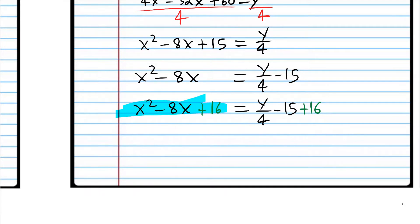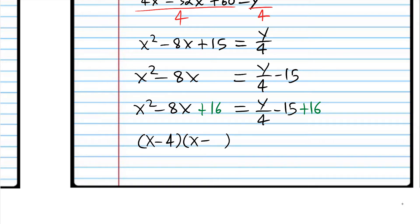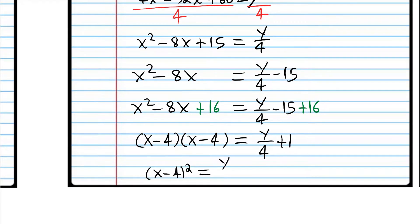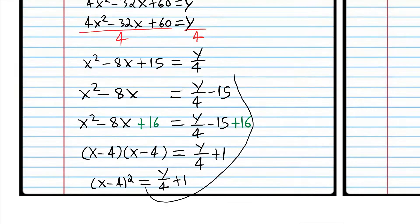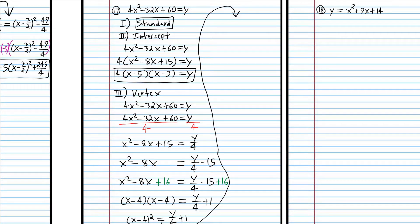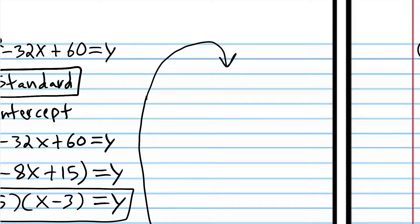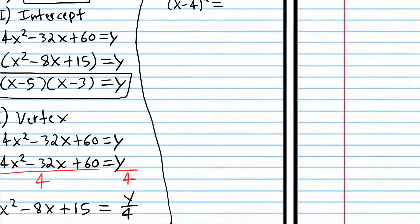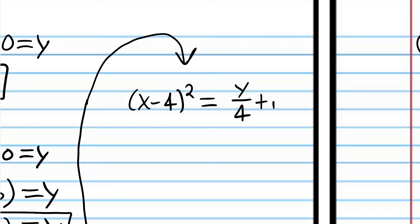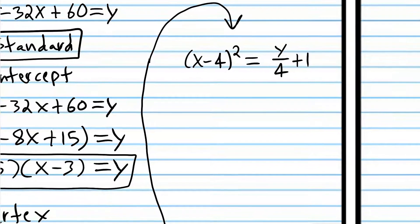Now we're ready to complete the square. What number do we add? We take the coefficient of x, divide by 2 and square it — and we get 16. Adding 16 to both sides, we have our complete the square process done. This completes the square on the right side, and over on the left side, we get a constant that we'll combine with the numbers already there.